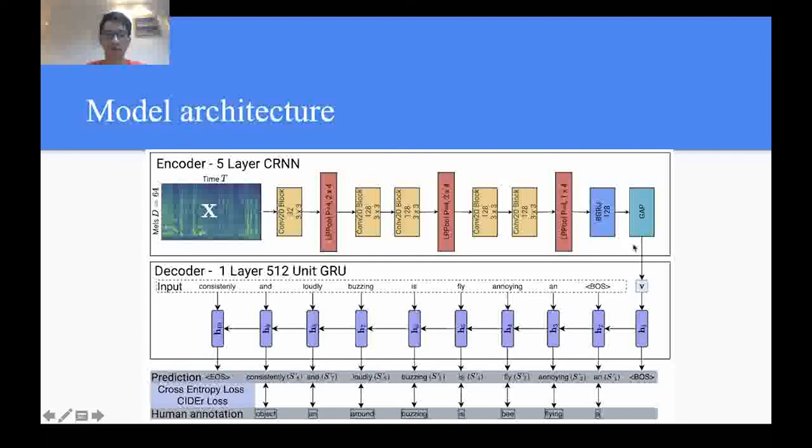After the CRNN encoder, X is transformed into a 256-dimensional vector representation, V, which is fed to the GRU decoder, which is a unidirectional one-layer GRU to predict the caption output.